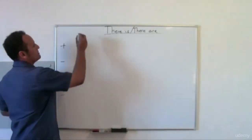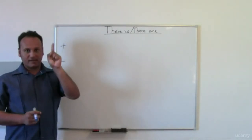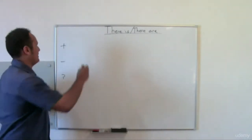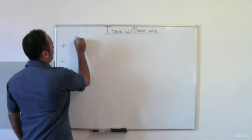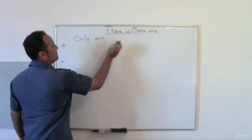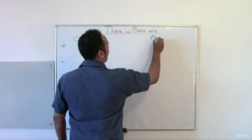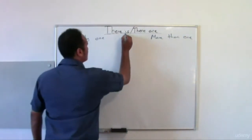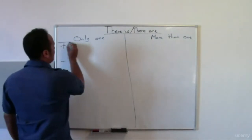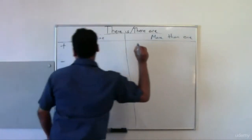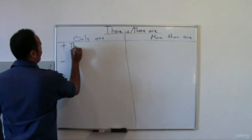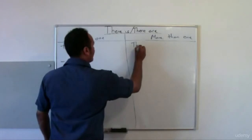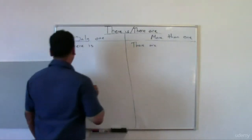When it's singular — there is only one — we're going to use 'there is'. And on the other side, when there is more than one, we use 'there are'.